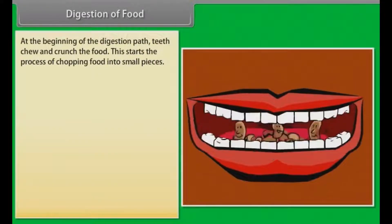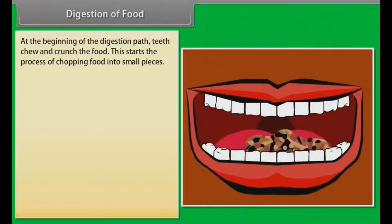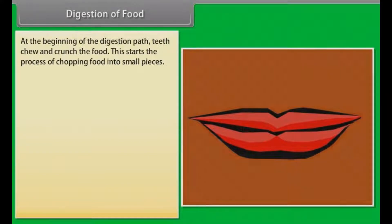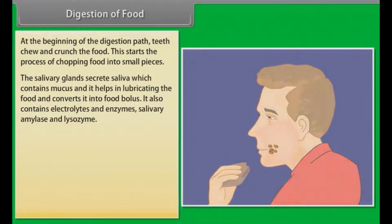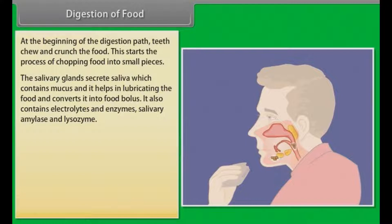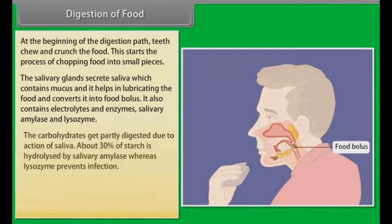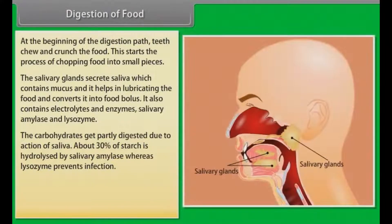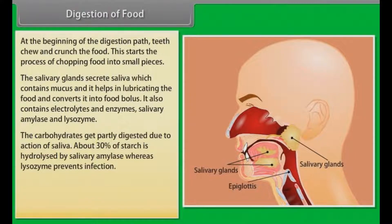At the beginning of digestion, teeth chew and crunch the food, chopping it into small pieces. The salivary glands secrete saliva, which contains mucus and helps in lubricating the food and converts it into food bolus. Saliva also contains electrolytes and enzymes, salivary amylase and lysozyme. The carbohydrates get partly digested due to the action of saliva — about 30% of starch is hydrolyzed by salivary amylase, whereas lysozyme prevents infection.